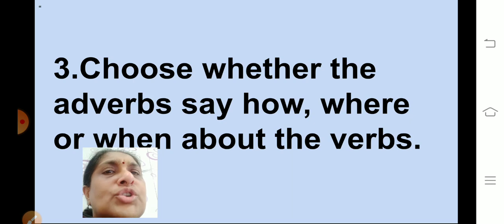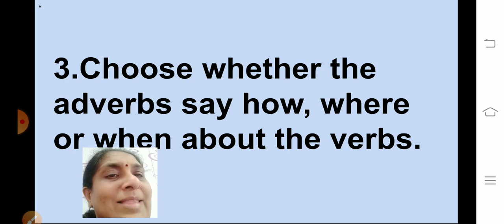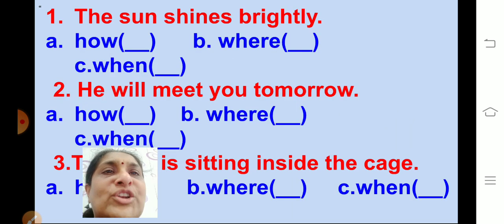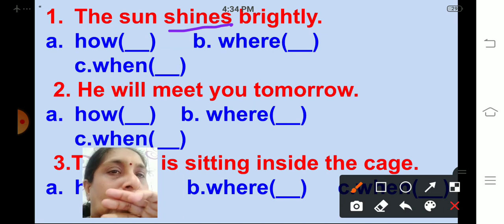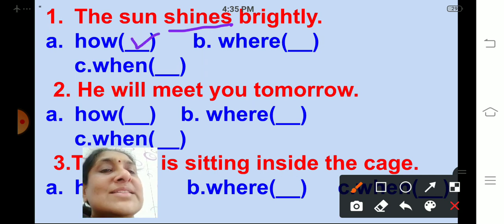Third activity: choose whether the adverbs say how, where, or when about the verbs. Adverbs are words that tell you how the action is done, where the action is done, or when the action is done. First: the sun shines brightly. The verb is shines. How does the sun shine? Brightly. So the adverb says how.